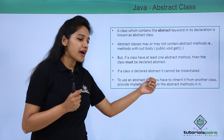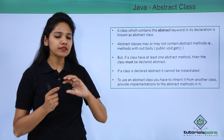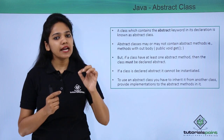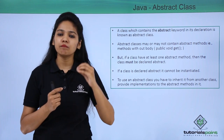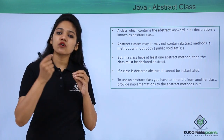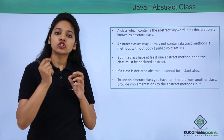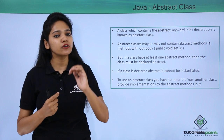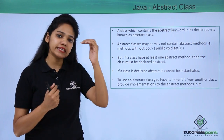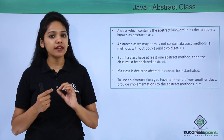To use an abstract class, you need to inherit all its declared methods. If a class extends an abstract class, it must define each and every method declared in that abstract class. If the class does not want to define every method, then that class itself must also be declared abstract.